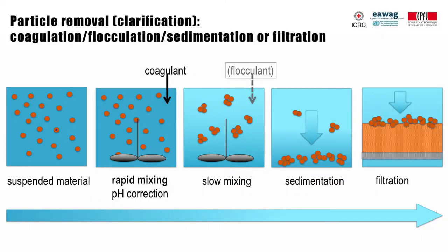Coagulation is usually a pretreatment step. Its goal is to change fine dispersed particles into larger agglomerates that can be removed by sedimentation or filtration or both. In the coagulation process, a metal salt such as aluminum or iron salts are added to water containing dispersed, negatively charged particles. Aluminum ions destabilize the particles by neutralizing their charge. Water is rapidly mixed and pH may need correction. These destabilized particles form flocs which grow larger during slow mixing and finally settle down and can be more easily filtered out.